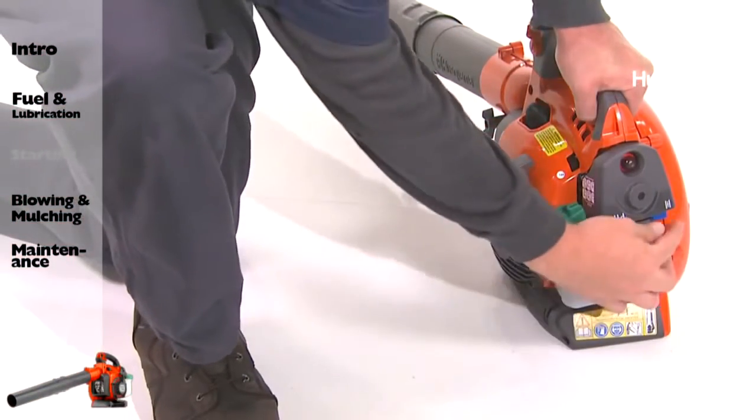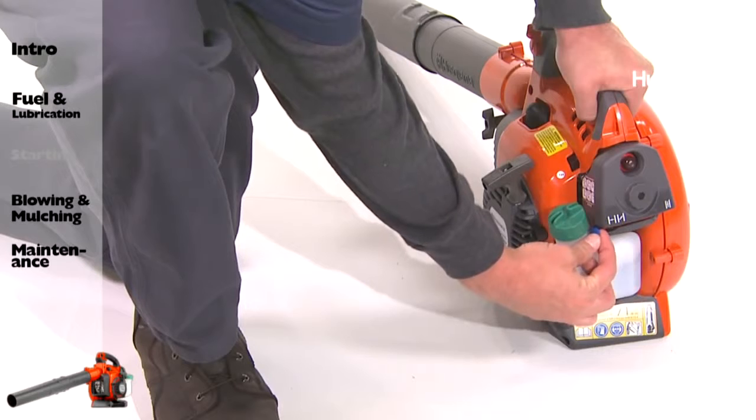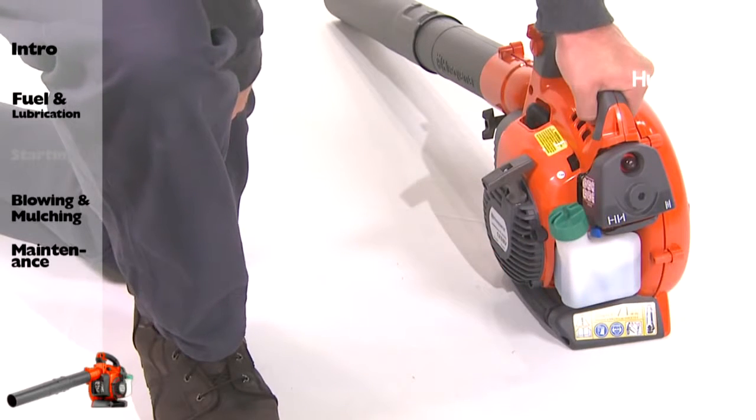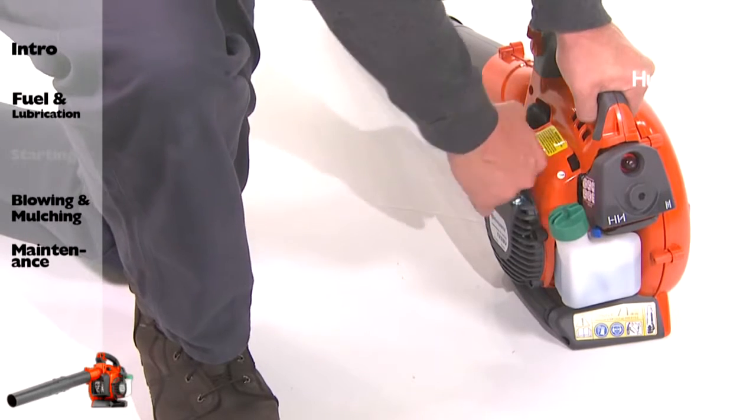Next, move the blue engine choke lever to the full choke position. Hold the body of the machine on the ground using your left hand. Firmly grip the starter rope handle with your right hand.